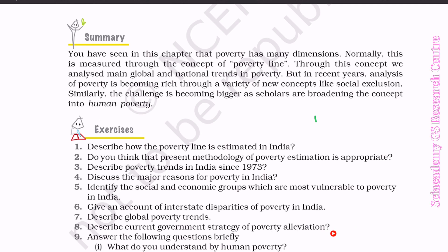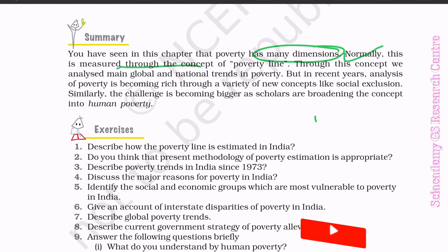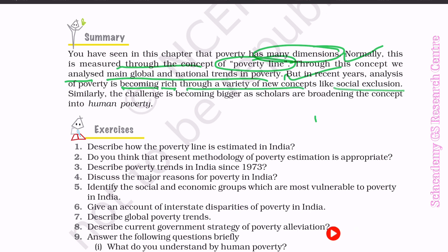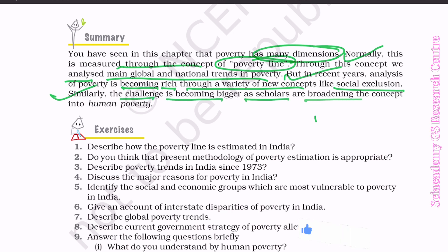Summary: In this chapter, you have seen that poverty has many dimensions. Normally, this is measured through the concept of the poverty line, through which we analyzed main global and national trends in poverty. But in recent years, the analysis of poverty is becoming richer through a variety of new concepts like social exclusion. Similarly, the challenge is becoming bigger as scholars are broadening the concept into human poverty.